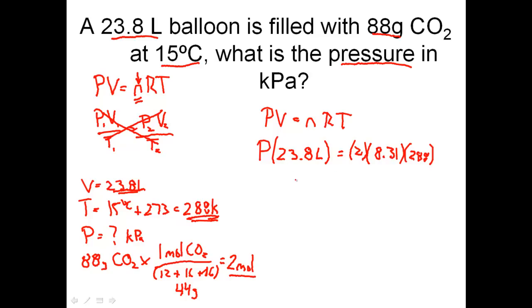We're going to solve for P. P equals, and we take our 23.8 and bring it over. So it's 2 times 8.31 times 288 divided by 23.8. Let's pause and solve that. The pressure comes out to be 201 kPa.